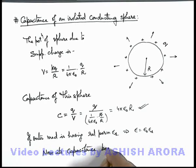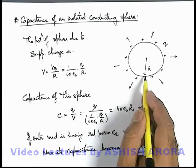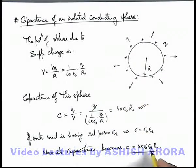C = 4π ε₀ εᵣ r. That will be the capacitance of this isolated sphere placed in a medium with relative permittivity εᵣ.